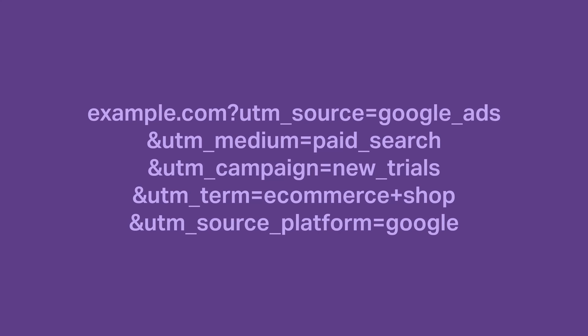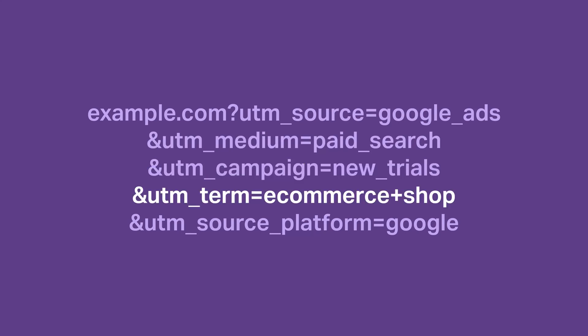Here's another example: Google. Think about a paid search campaign via Google Ads. Your UTM source is Google Ads. Your medium could be paid search. And your campaign name could be the name of your ad campaign. UTM term would hold the keyword or search term where your ad appeared. And UTM source platform would be Google.